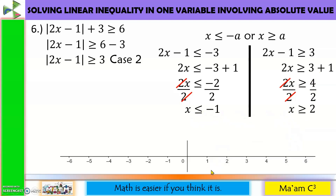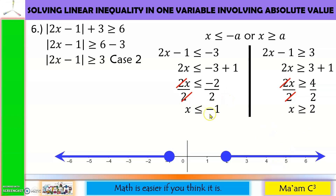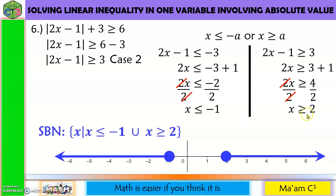Graph: on negative 1, shaded circle pointing left (or equal to); on 2, shaded circle pointing right (or equal to). The union gives our set builder notation. Interval notation: negative infinity to negative 1 included, union 2 included to positive infinity.